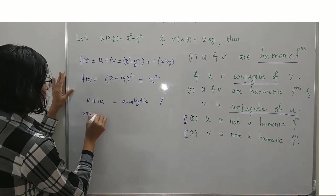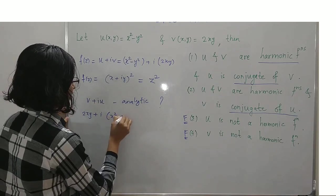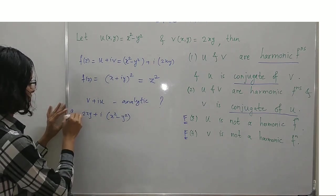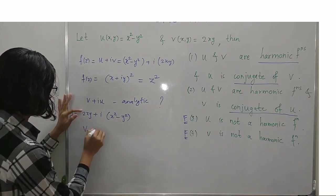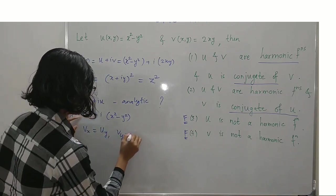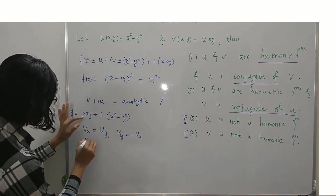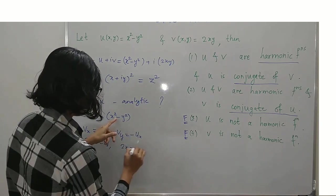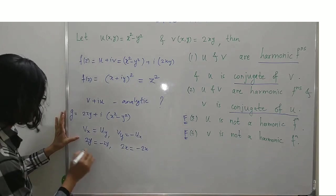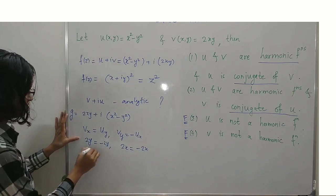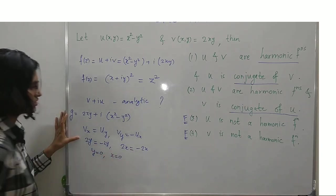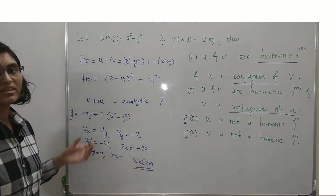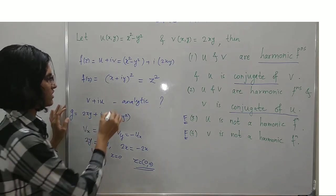v + i·u = 2xy + i·(x² - y²). Checking the Cauchy-Riemann equations for this function g: we need v_x = u_y and v_y = -u_x. We get v_x = 2y, u_y = -2y, v_y = 2x, and -u_x = 2x. So 2y = -2y implies y = 0, and the second equation gives x = 0.